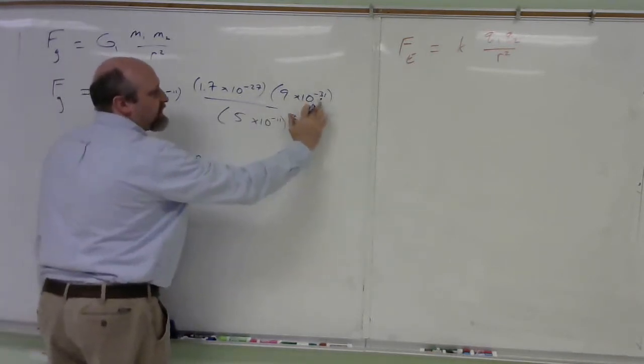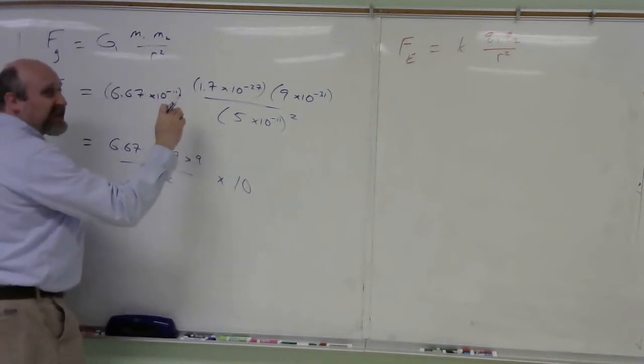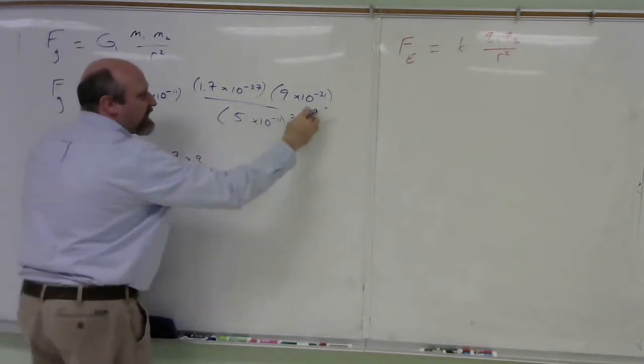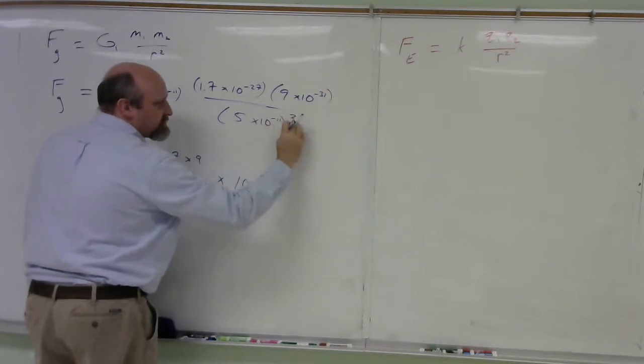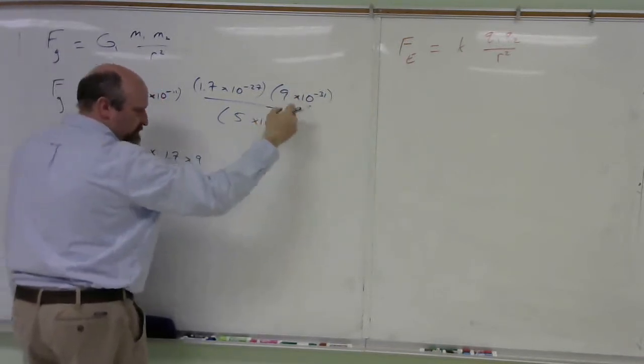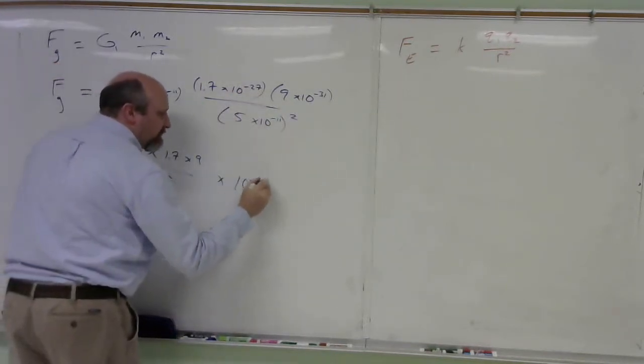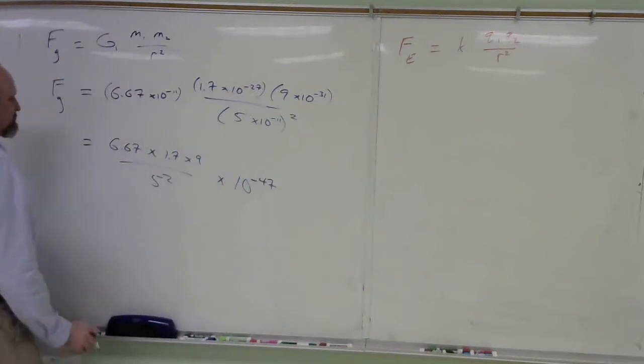10 to the negative 27, 10 to the negative 31, that's 10 to the negative 58, times 10 to the negative 11, that would be 10 to the negative 69, divided by negative 11 squared. That's negative 22. When I divide by it, I'm going to subtract. So it flips the sign and becomes plus 22. So negative 69 plus 22 is negative 47. So that's it.